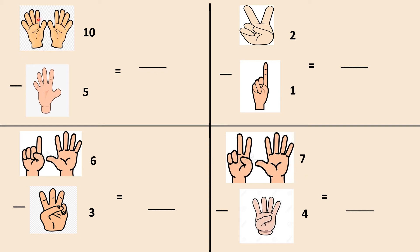Let's try to understand subtraction using finger counting. Here are ten fingers — one, two, three, four, five, six, seven, eight, nine, ten. I have written ten over here. Here are five fingers — one, two, three, four, five — and I have written five over here. This is minus sign. It means from ten fingers, I have to remove five fingers. So let's remove five fingers. I have removed all these five fingers. Now how many fingers am I left with? One, two, three, four, five. My answer would be five.